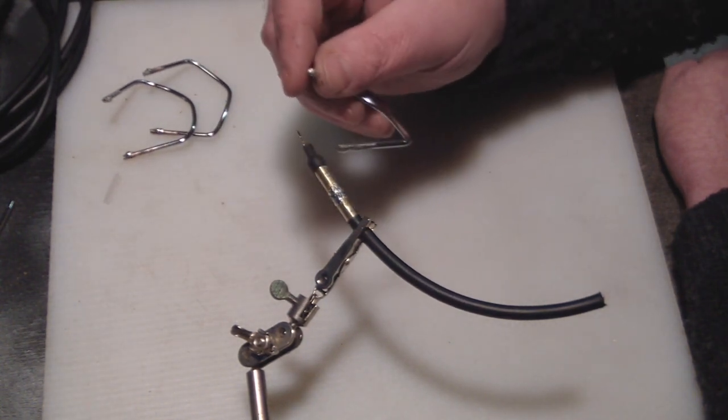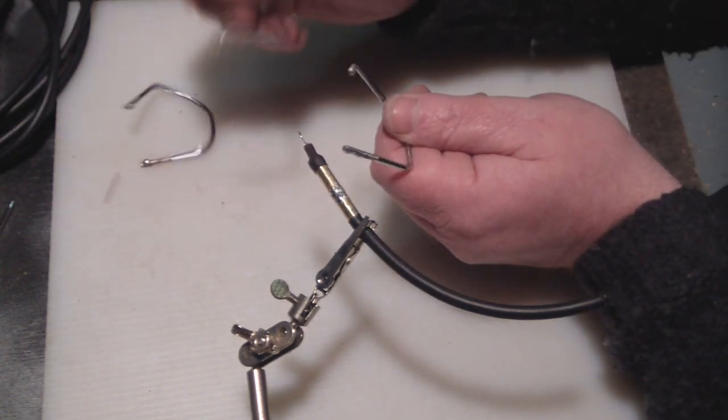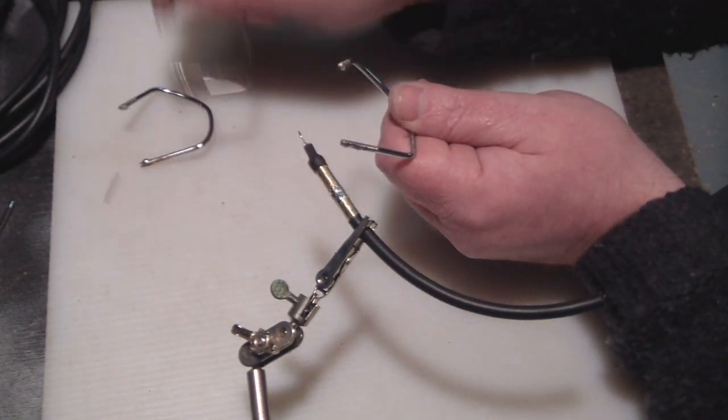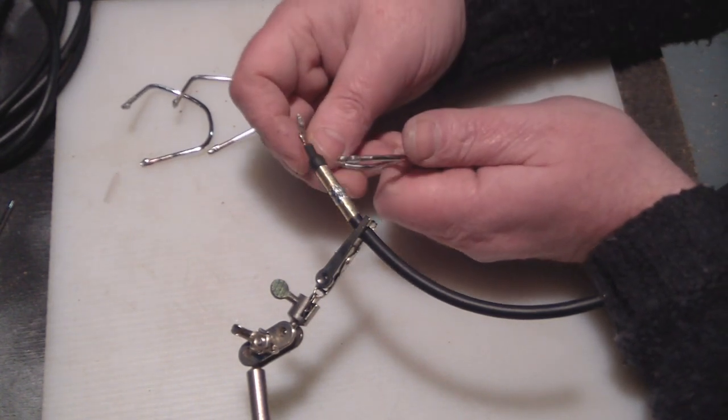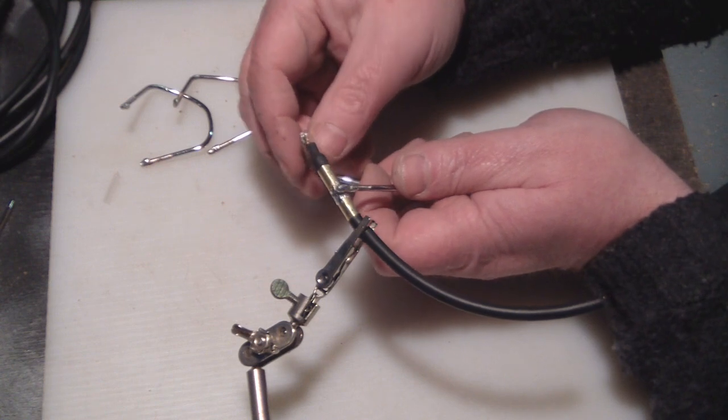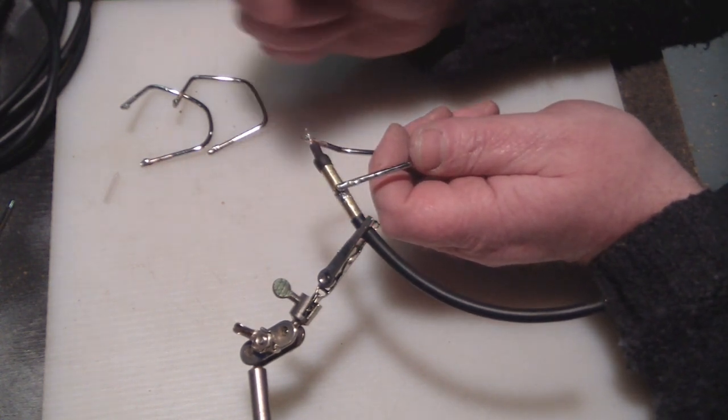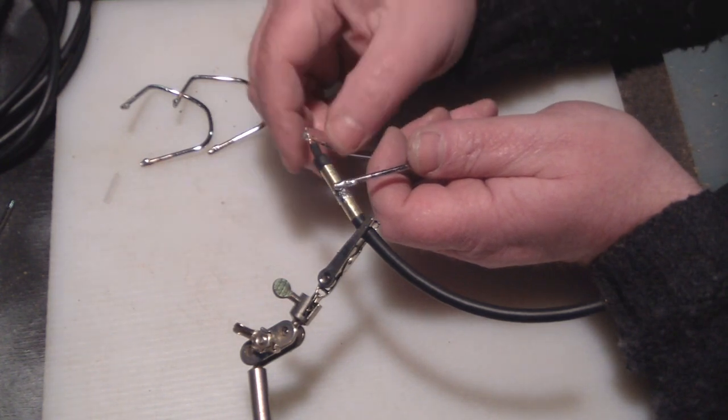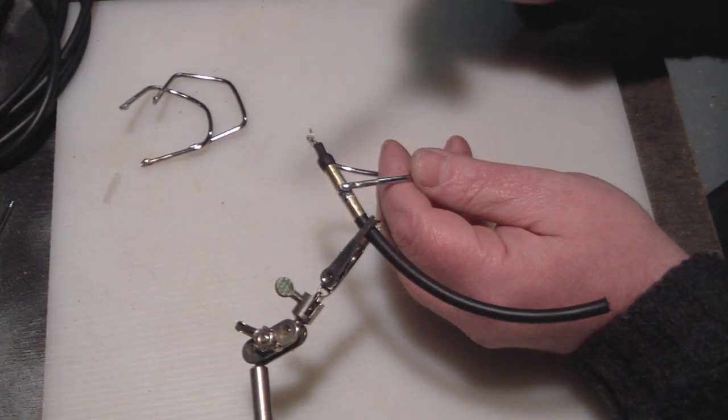So you also want to go and tin all the ends of your clover leaf elements like so. Because it's going to make it a lot easier for the next part. Because what we're going to actually do is we're going to solder these elements on like so, all the way around. This is probably the trickiest part of building this antenna.